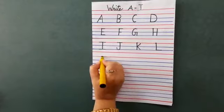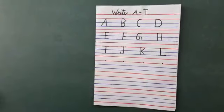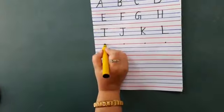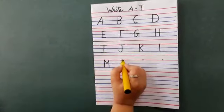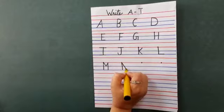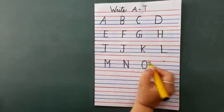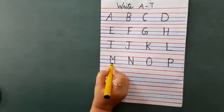Okay. Now again put dot for them like this. Now next line, M, N, O, P. Now we will write M, N, O, P. Always touch the line. The lower line should always be touched. Okay children. Now again put the dot.